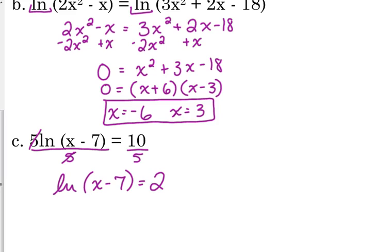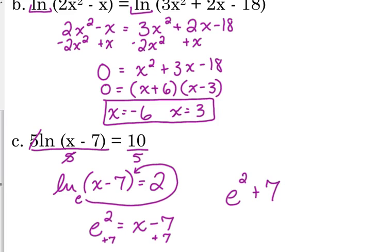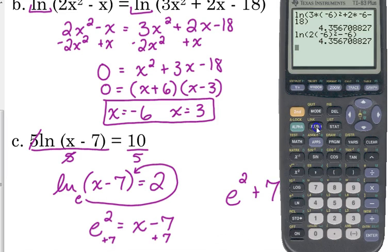We're solving for the variable. The variable is stuck inside of our logarithm. Only way to get it out is write it in exponential form. And I don't have a base. What is the base of the natural log? E. Very good. So E squared is equal to x minus 7. Add 7 to both sides. We can't do anything—I mean, we can. We can get a decimal approximation here. But this is the exact answer. E squared plus 7 is the exact answer.